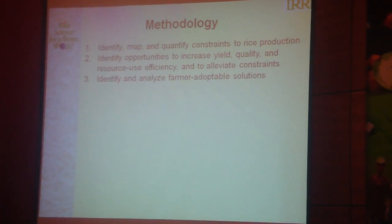Coming back to our strategic exercise, our methodology is first to identify, map, and quantify constraints to rice production — both abiotic constraints such as drought and salinity, and biotic constraints like pests and diseases. We want to identify opportunities to increase yield, the quality of it, and the resource use efficiency — specifically the efficiency of fertilizers and water with which we produce yield — and to alleviate these constraints.